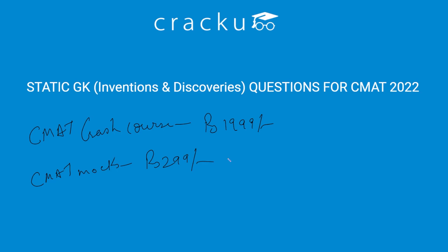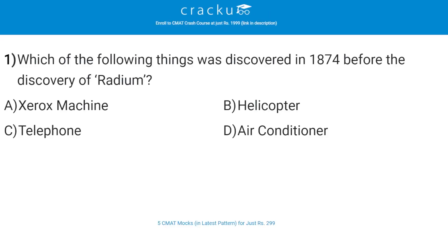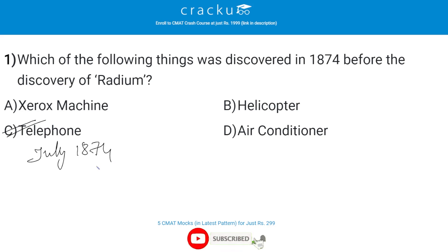Let's start with the first question. Which of the following things was discovered in 1874 before the discovery of radium? The correct answer is C, Telephone. Telephone was discovered in July 1874. And as we know, the inventor of the Telephone is Alexander Graham Bell.